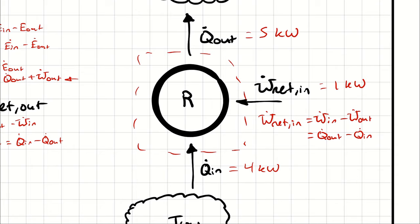By the way, what is the coefficient of performance of that system? The correct answer is: it depends on whether we're using it as a cooling device or a heating device. If we're using it for cooling, we take Q-dot in over net work in, which gives a COP of four. If we're using it for heating, we take Q-dot out over net work in, which gives a COP of five.